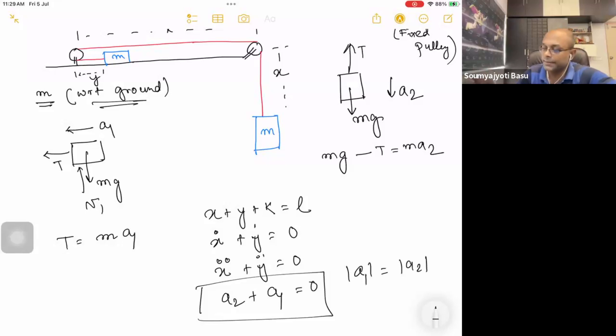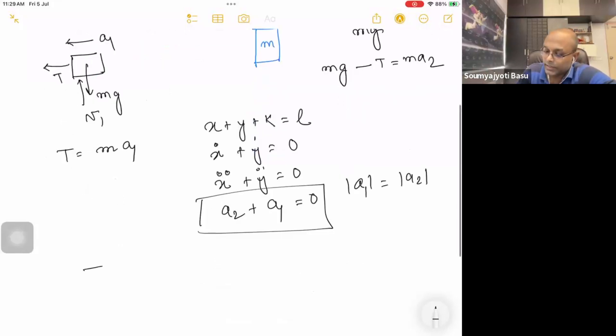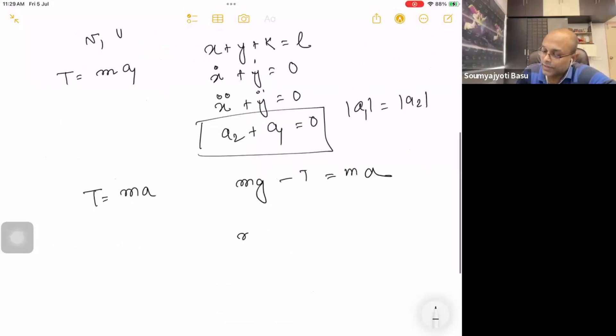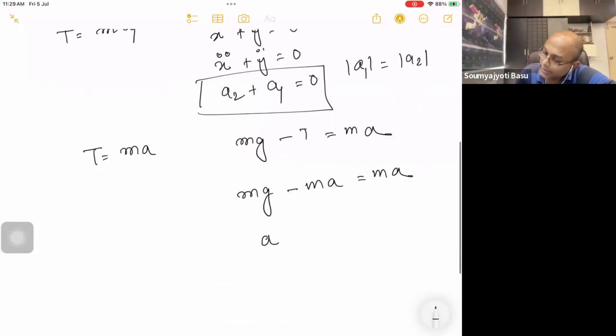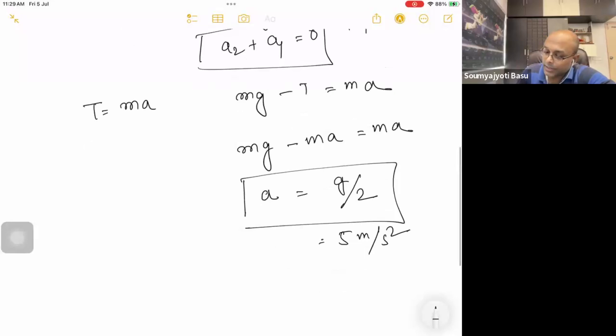a1 is equal to a. I'm going to write T equals ma and mg minus T equals ma. So mg minus ma equals ma. Therefore a equals g by 2, which is 5 meters per second squared. T is equal to 1 into 5, which is 5 newtons. The force is equal to 5 newtons.